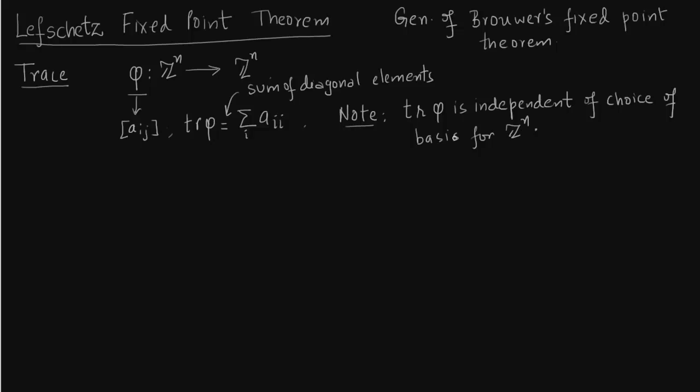Now I want to define a homomorphism between finitely generated abelian groups and then define the trace of that homomorphism. Consider this homomorphism Phi from A to A where A is a finitely generated abelian group.